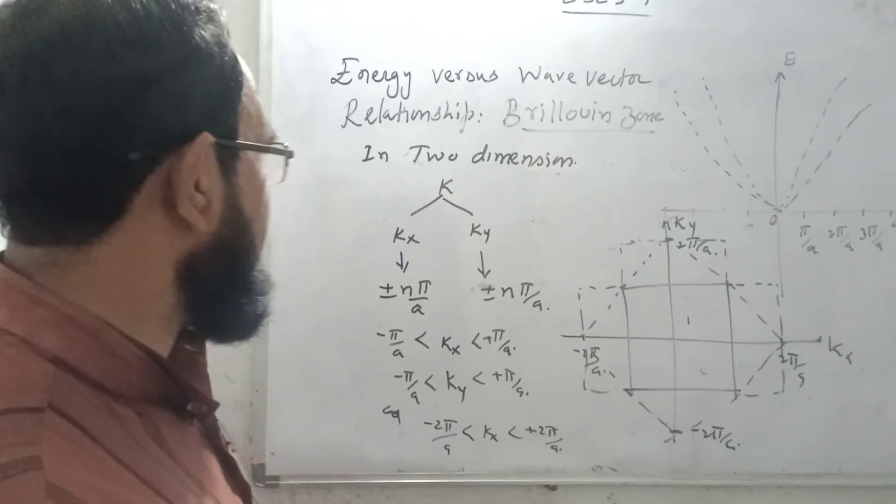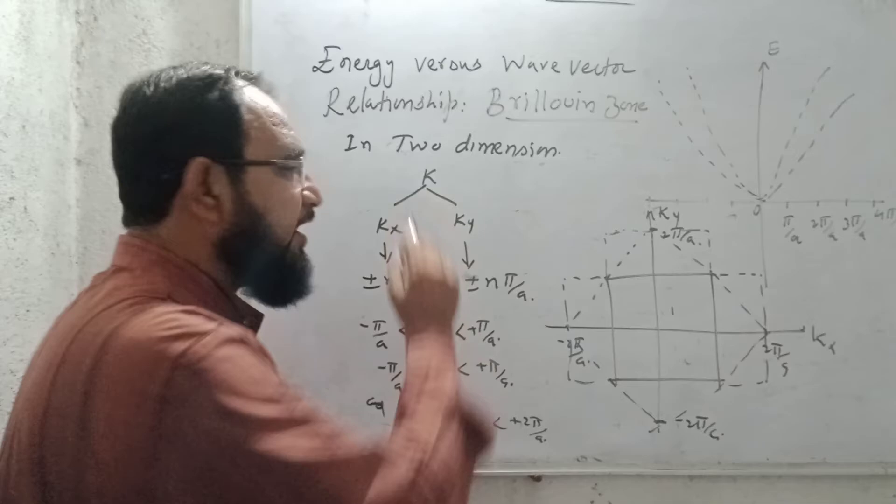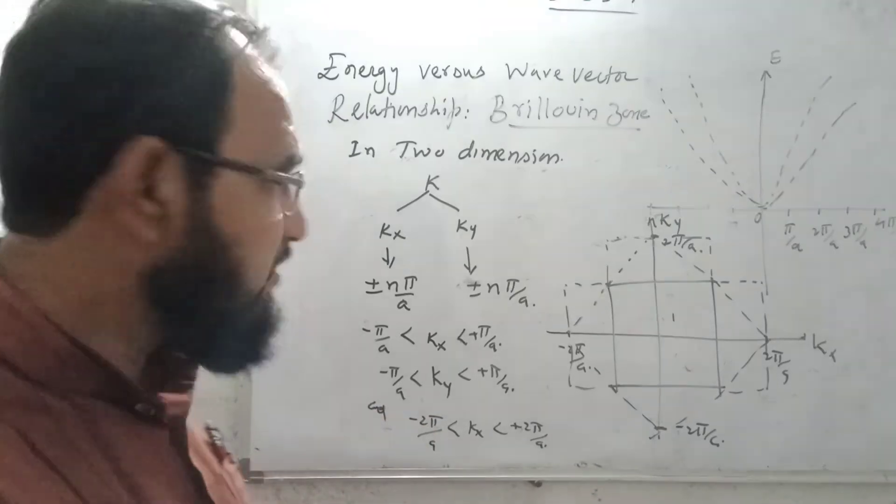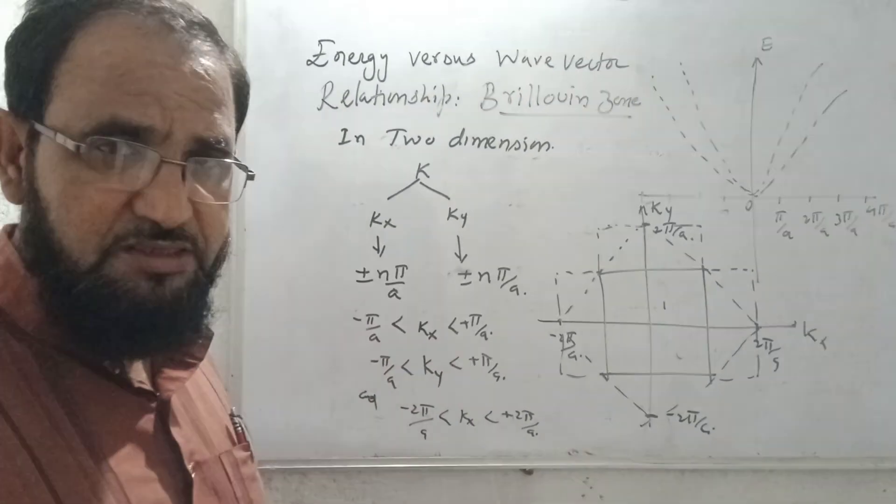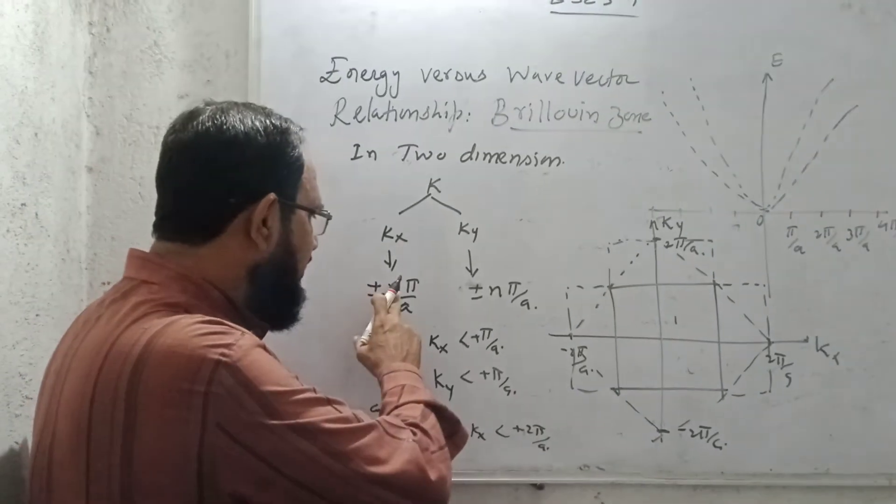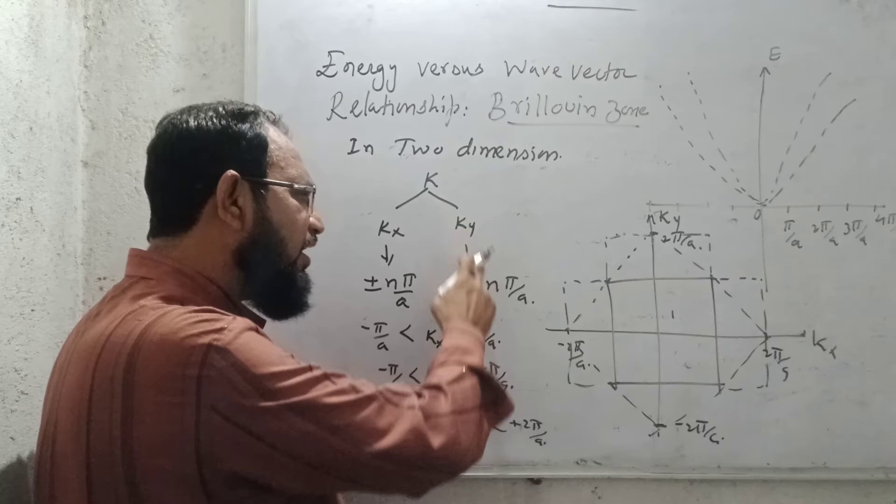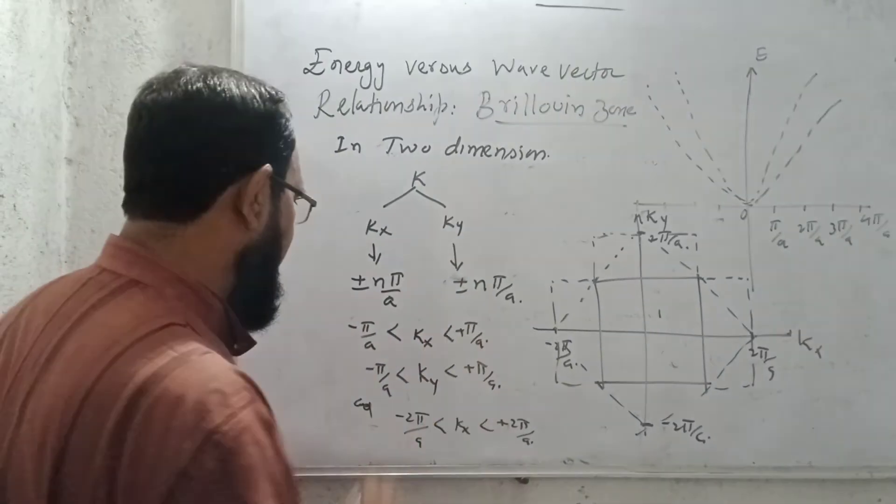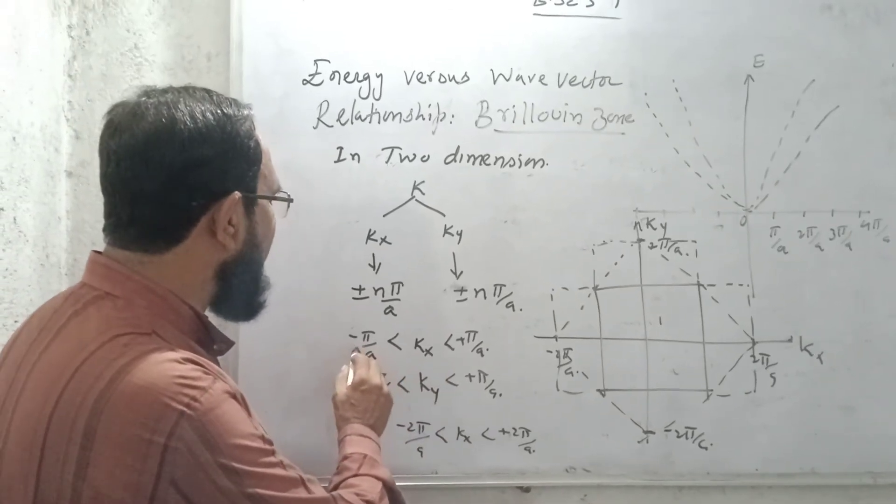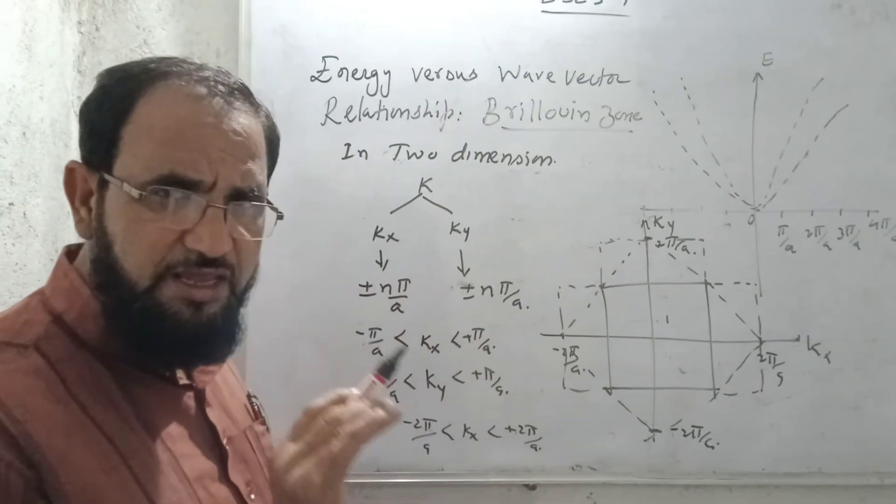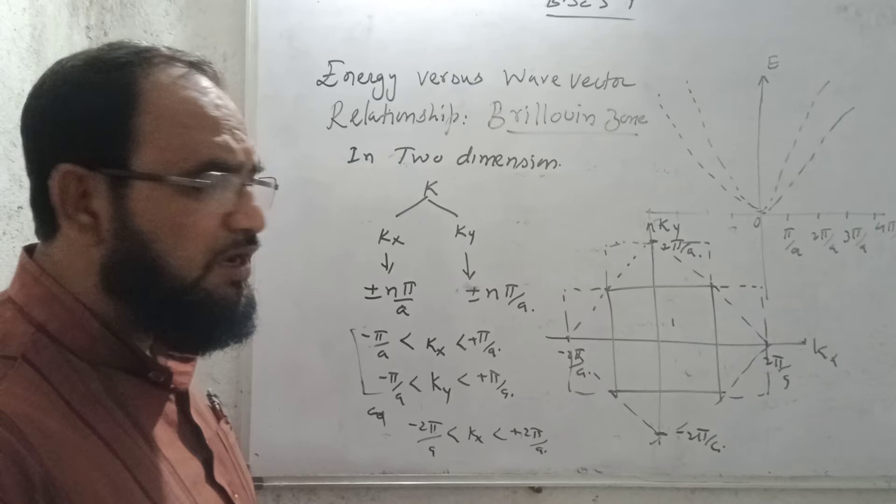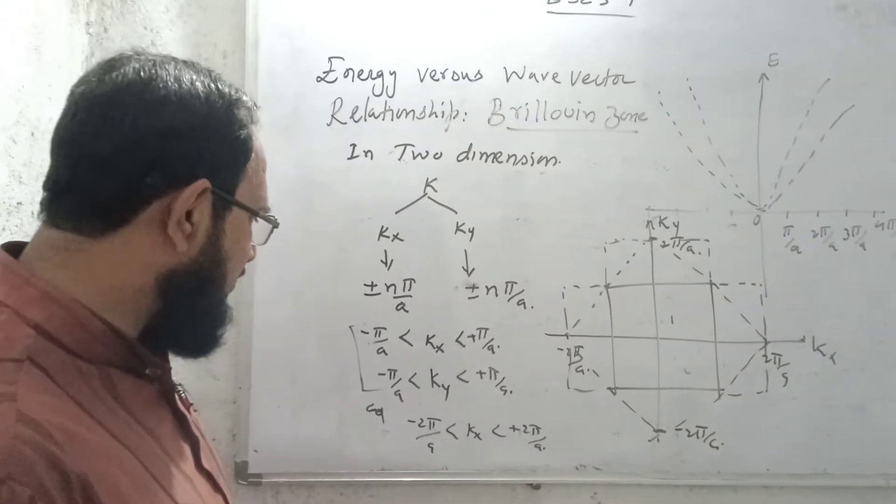So in two dimension, the value of K will be divided into two parts, that is KX and KY, means along the X axis and along the Y axis. So discontinuity of K will occur at N π upon A plus minus Nπ, and KY also occur at plus minus Nπ upon A. So for the first zone, we can see that the value of KX is from minus π/A to plus π/A. Similarly here, value of KY for the first zone is minus π/A to plus π/A.